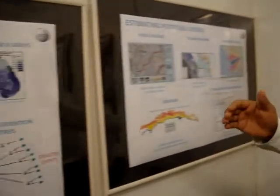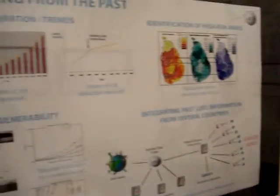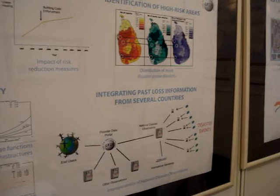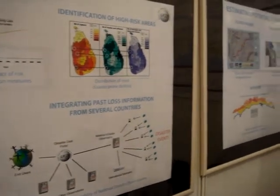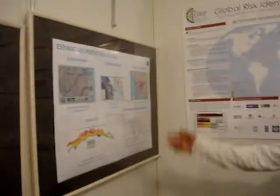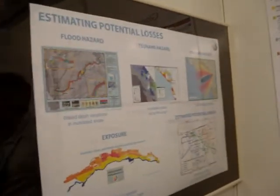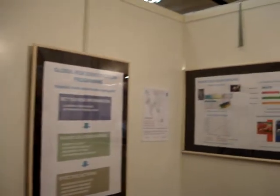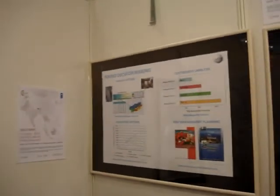We do RICS assessment by learning from the past. This is done by having a disaster data collection system, which is the disaster observatory. We also do this through national and local RICS assessments, and we help in decision making.